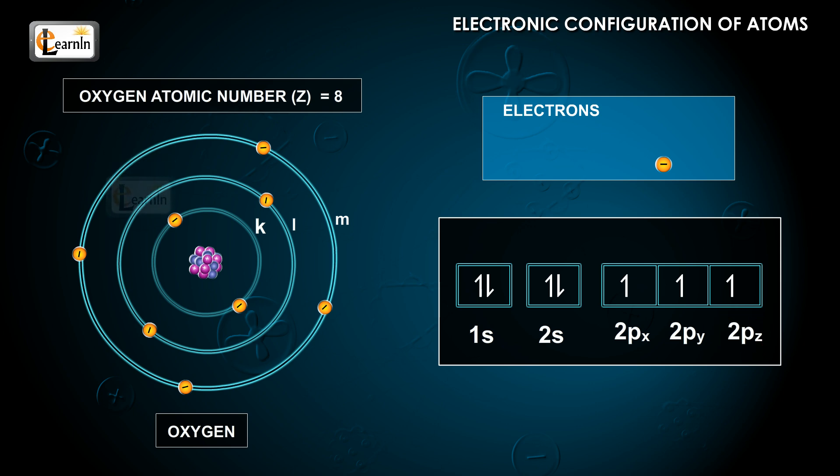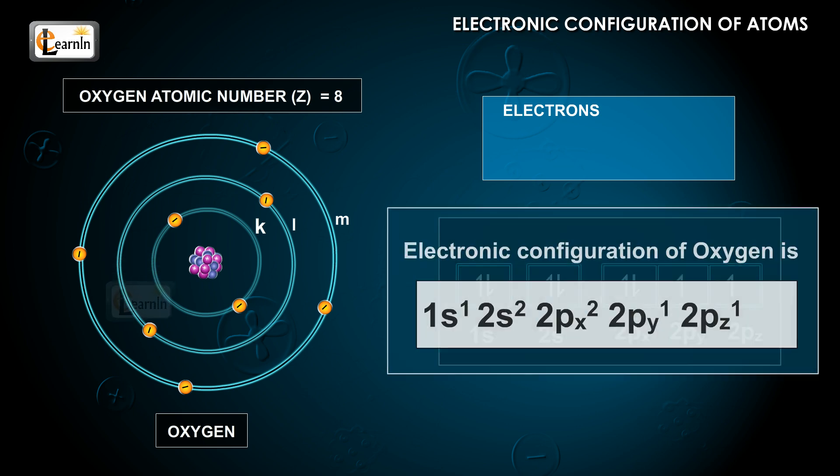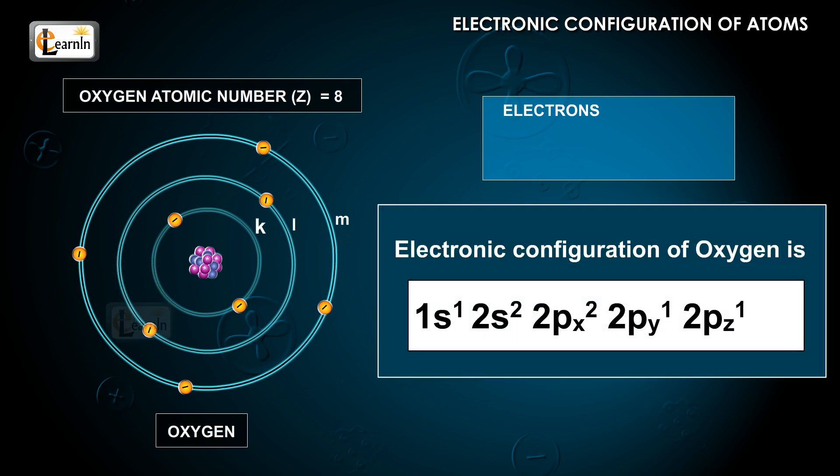Now, since all three sub-orbitals have one electron each, the eighth electron can pair with any of the three electrons in 2px, 2py, and 2pz. So, the electronic configuration of oxygen can be written as 1s2, 2s2, 2px2, 2py1, 2pz1. The arrows indicate the electrons with a spin plus one-half and minus one-half.